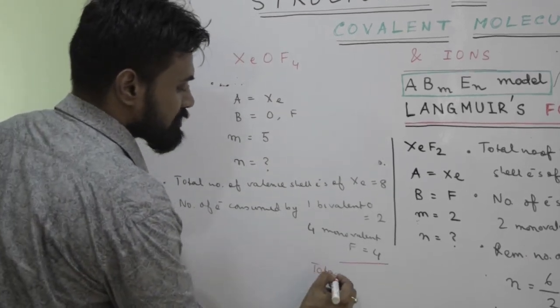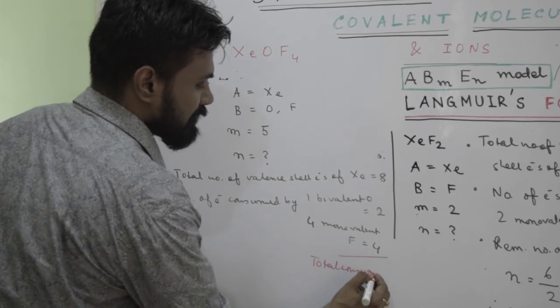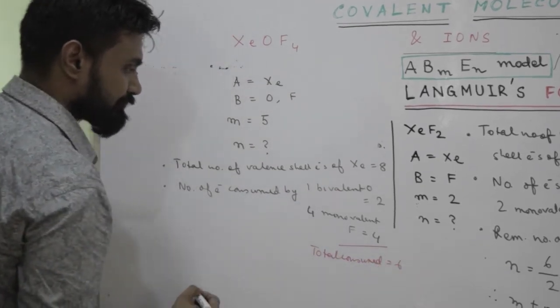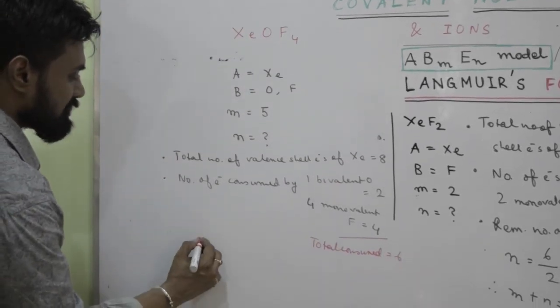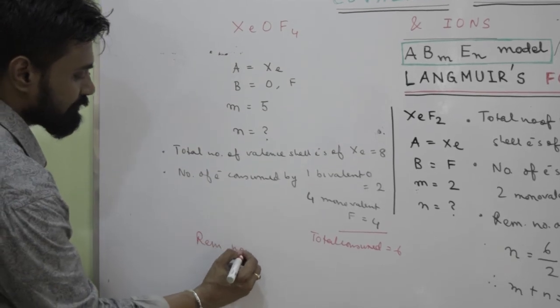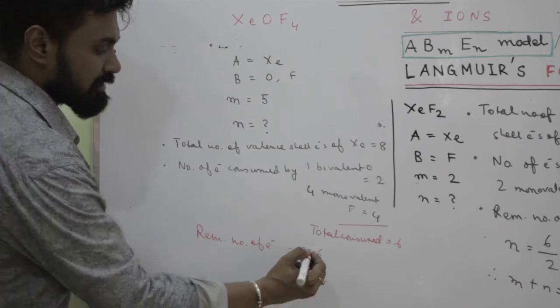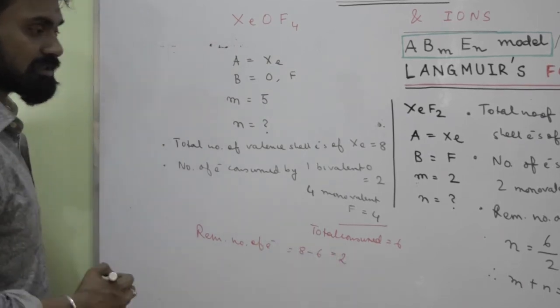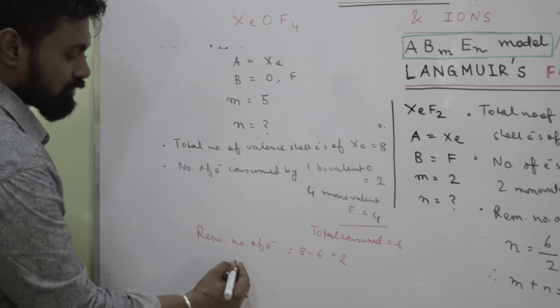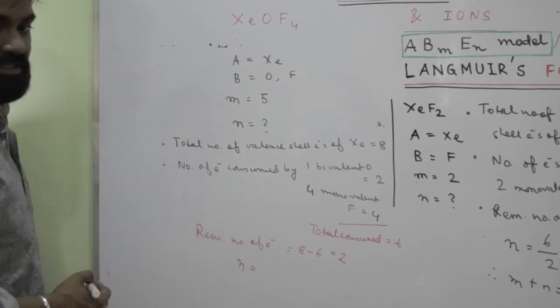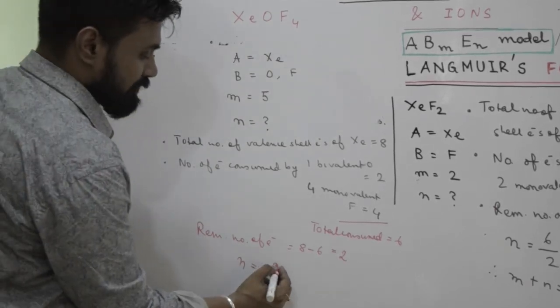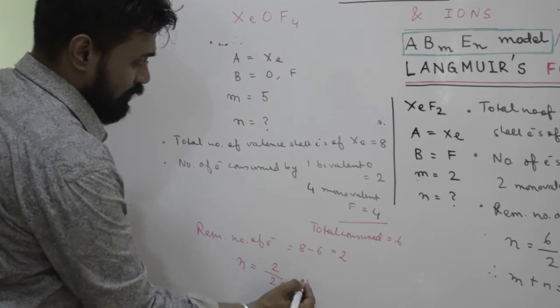So what is the total consumed? The total consumed is 6. So what is the remaining number of electrons? It is 8 minus 6, that gives you 2. Again the same logic: one lone pair has two electrons, so we are finding n, that is the number of lone pairs. So it will be 2 by 2, that is 1.